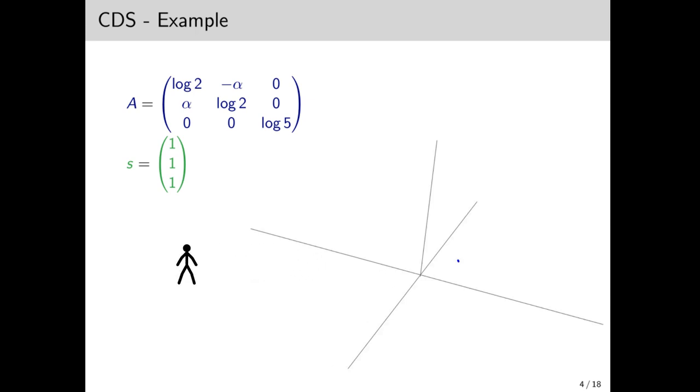Now, in order to understand the behavior of the system, we have to figure out what e to the Ats looks like. So Ats looks like this. We just multiply everything by t. We then take the exponential of A, which turns out to look like this. Again, don't worry too much about that.